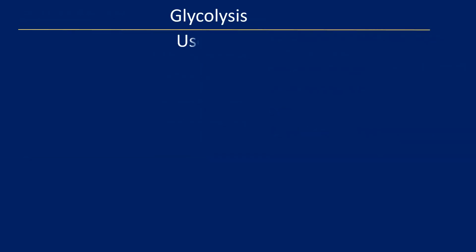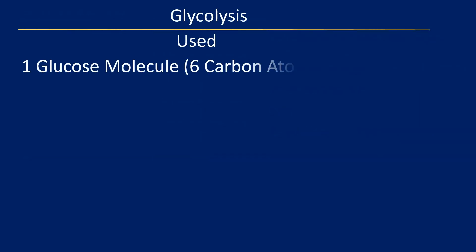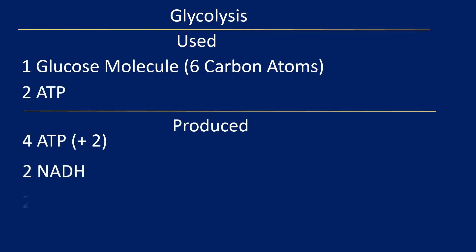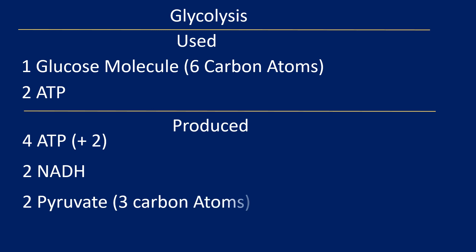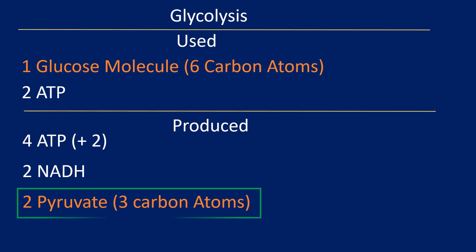Thus, during glycolysis, from one glucose molecule and two ATP used, are produced 4 ATP, 2 NADH, and 2 pyruvate molecules. It should be noted that the glucose molecule contains 6 carbon atoms, and the 2 pyruvate molecules contain 3 carbon atoms each. Depending on oxygen availability, pyruvate can be used in the citric acid cycle or serve as a precursor for other metabolic reactions.